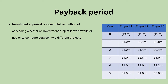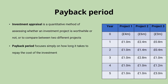We've got three projects here: one with a cost of four million pounds, project two with a cost of six million pounds, and project three with a cost of three million pounds. They're providing cash returns over a five-year period. With the investment appraisal method of payback period, we're focusing purely on how long it takes to repay that initial investment cost. In order to work that out, you need to go through a couple of steps. The first step is to determine the year in which the payback occurs.